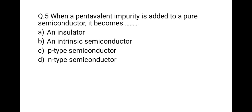The next question: when a pentavalent impurity is added to a pure semiconductor, it becomes what? The correct option is an N-type semiconductor. When we add a pentavalent impurity, its 4 electrons share with the valence electrons of the semiconductor and the fifth one remains free. So with pentavalent impurity, the majority charge carriers are electrons, making it an N-type semiconductor.